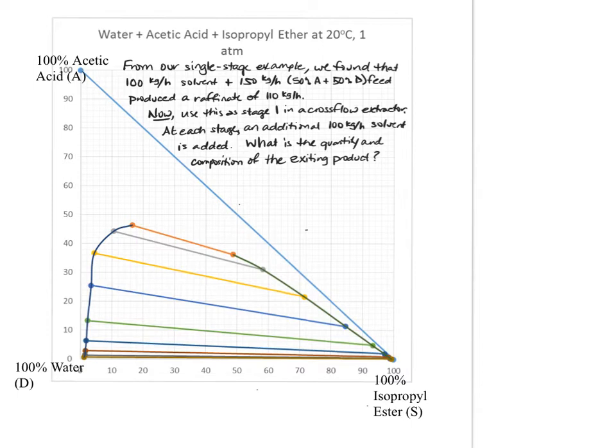We mixed that with a solvent that was 100 kg per hour. By doing that we produced a raffinate that was 110 kg per hour. And our construction lines were, and I'm going to try and redraw them very quickly on here. So we went from our feed to our solvent. Our resulting mixture was defined as being 40%. And then we could use tie lines to learn what was going to be in the raffinate and what was going to be in the extract. So this was our feed from step one.